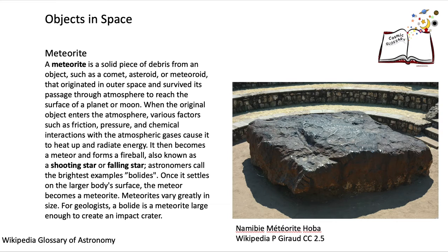Here is a meteorite — a particular one from Namibia in Africa. Objects that are in space are known as meteoroids. When they come through Earth's atmosphere they glow due to the friction of a high-velocity object passing through the gases. Once they land on Earth, they are called meteorites.